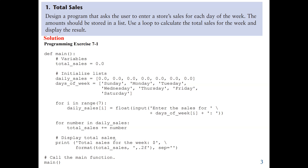Then we display the total sales. We have a print statement showing the total sales for the week with the amount formatted to two decimal places using the format function in currency style. Then we call the main function to execute the code. In summary: we have two lists — one for the day of the week and one for daily sales. We use one loop to get input for daily sales for each day, and another loop to find the total sales by iterating through the values and adding each one to the total. After finishing, we print our total sales.